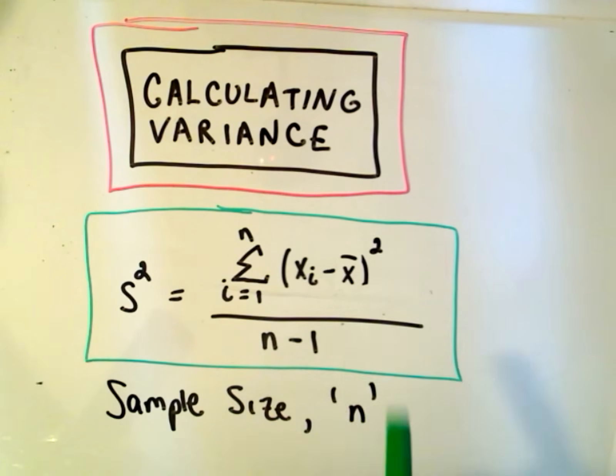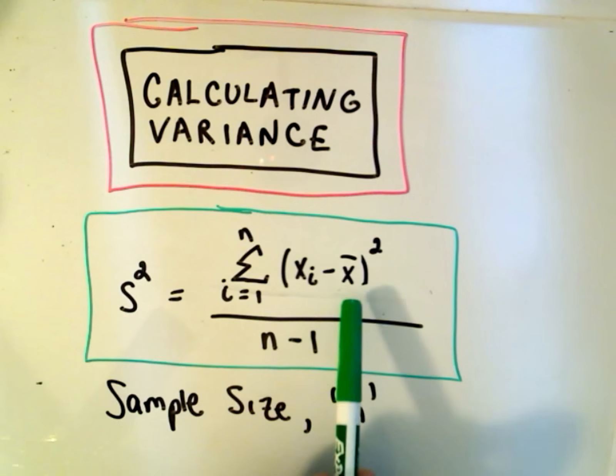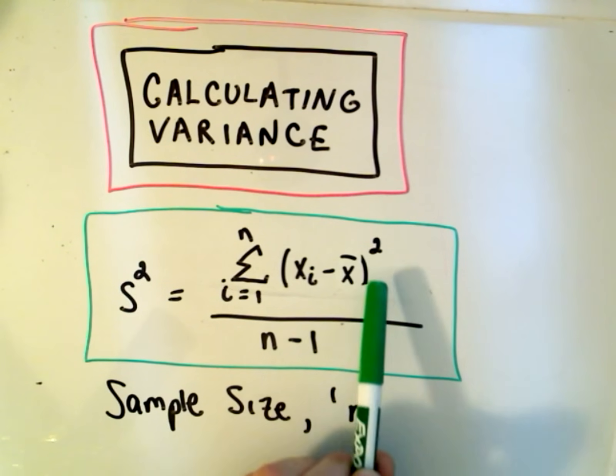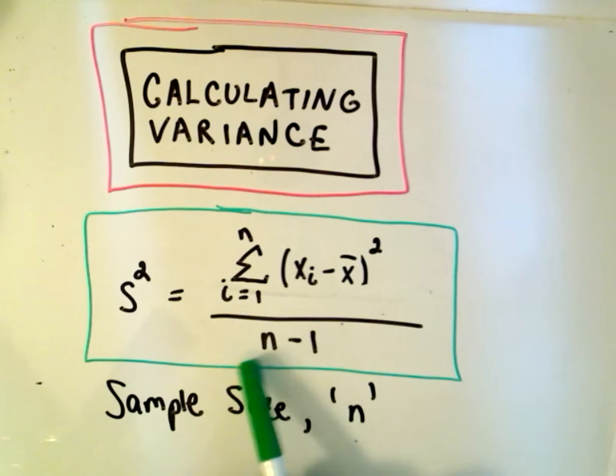To calculate the variance, x bar represents the average of your set of data. You have to subtract the average away from each value, square it, add them up, and then divide by the number of objects in your sample.